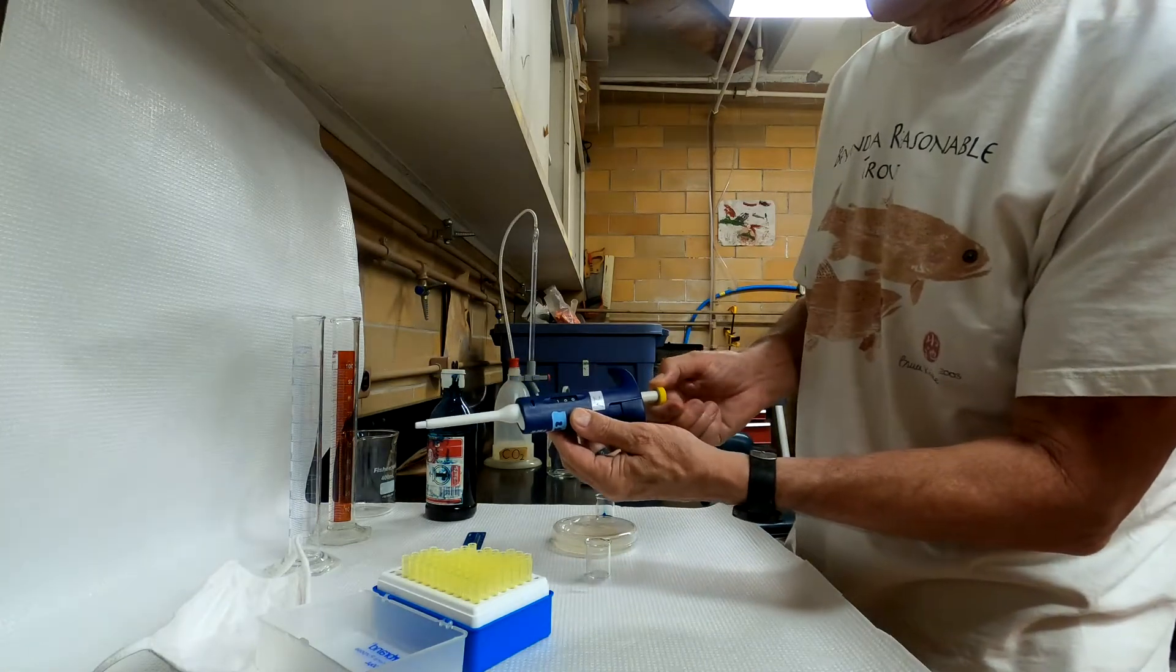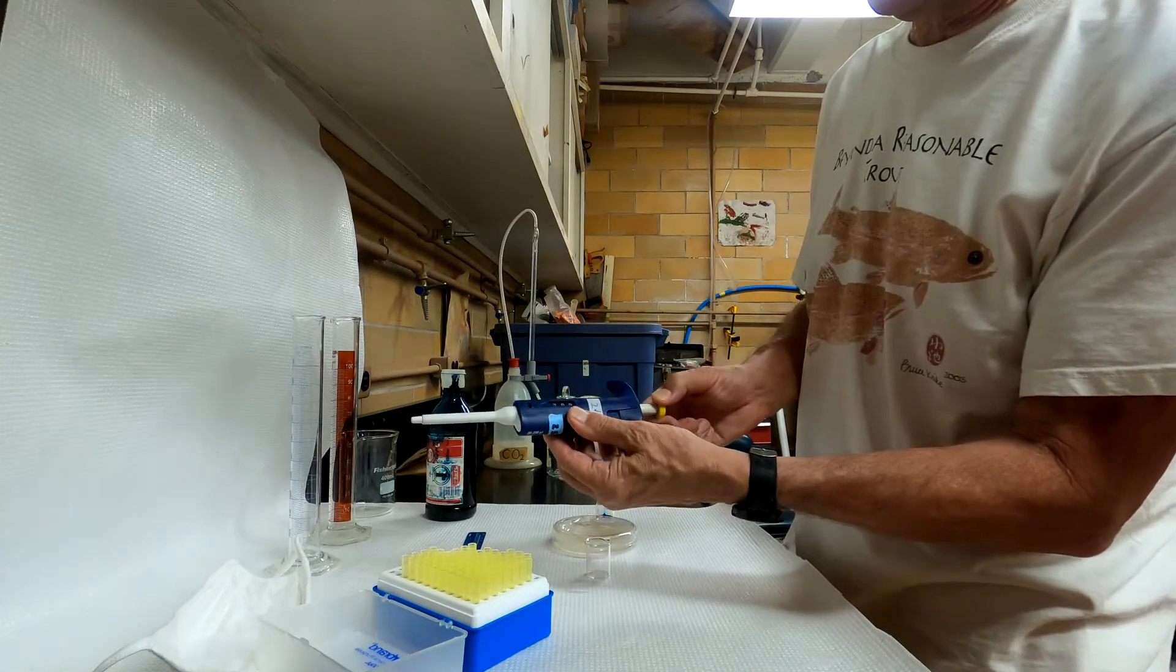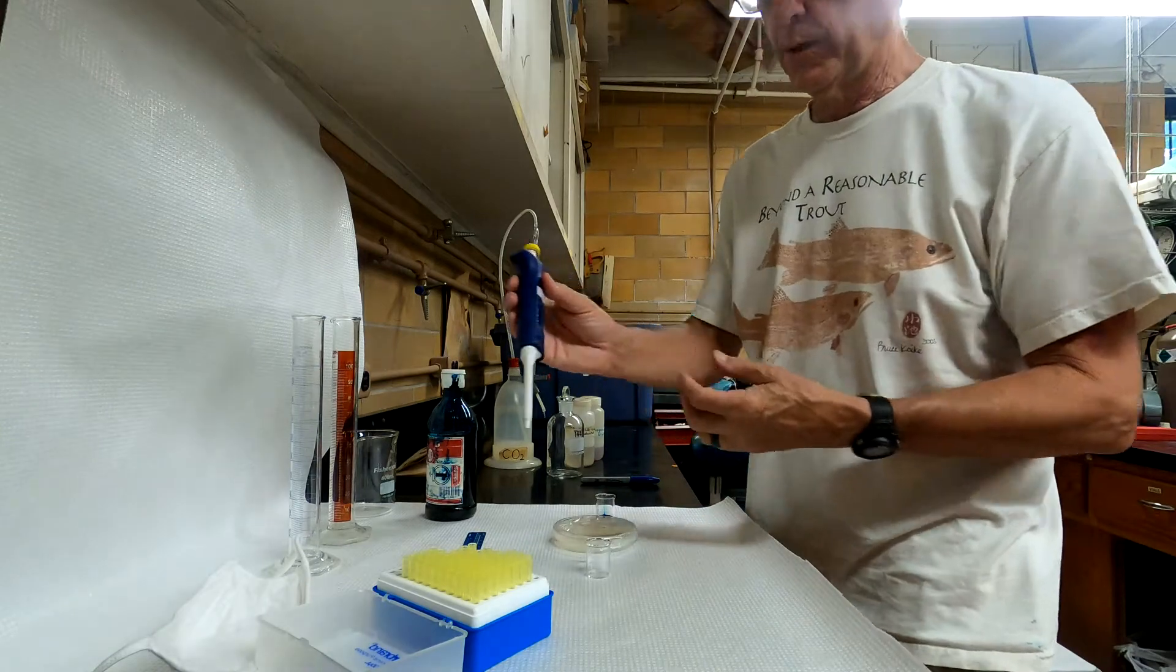We set the volume first by turning this knob, and it's set to 200 microliters, or .2 mils.